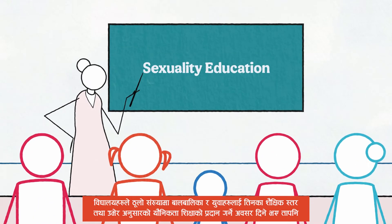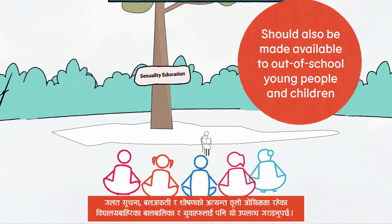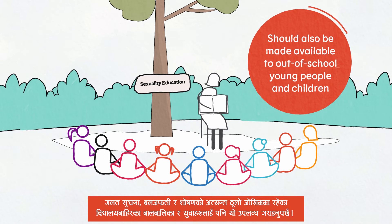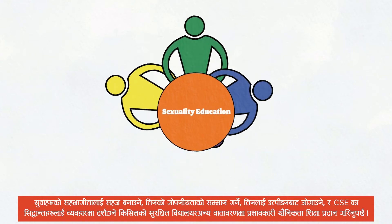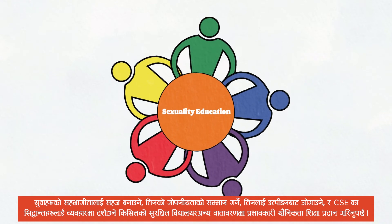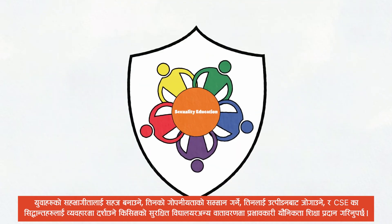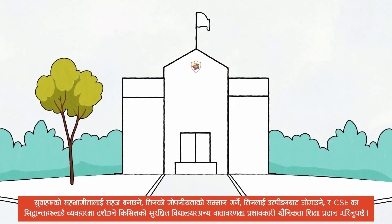While schools are an opportunity to reach large numbers of young people with sexuality education at appropriate development levels, it should also be made available to out-of-school young people and children, often the most vulnerable to misinformation, coercion, and exploitation. Effective sexuality education must take place in a safe environment where young people feel comfortable to participate and their privacy is respected, where they are protected from harassment, and where the school ethos reflects the principles of the content.